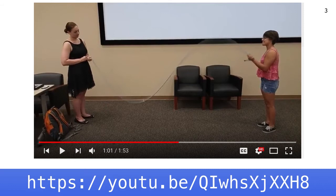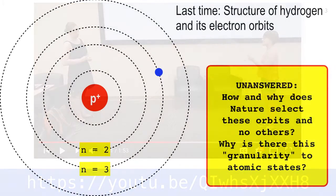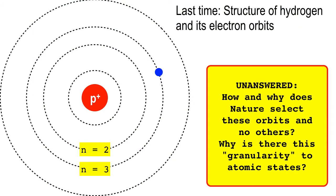Standing waves are important because we're trying to figure out the atom, the periodic table, and the structure of molecules. We're going to take a rapid tour through those concepts. Last time we talked about the hydrogen atom, the quantum structure, and how certain orbits are allowed — and for that reason only certain colors are emitted when an electron dips from a higher orbit to a lower orbit.